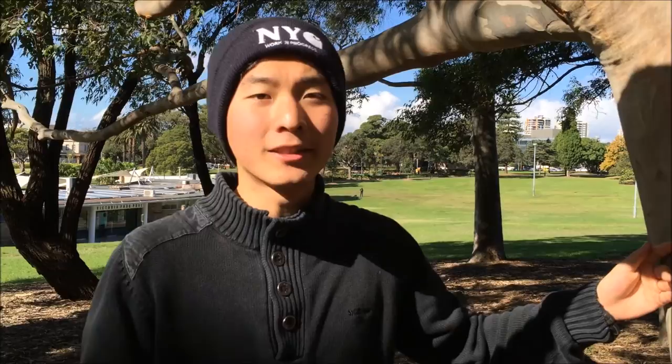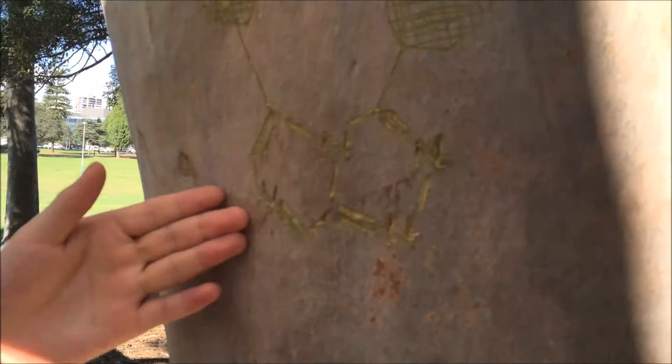For our anti-malarial drug we have synthesized this core molecule. It's triazolopyrazine. We have used condensation and cyclisation to create this molecule, and we have used aromatic substitution to substitute a chlorine atom with an organic molecule, and we're going to talk more about this reaction in this video.